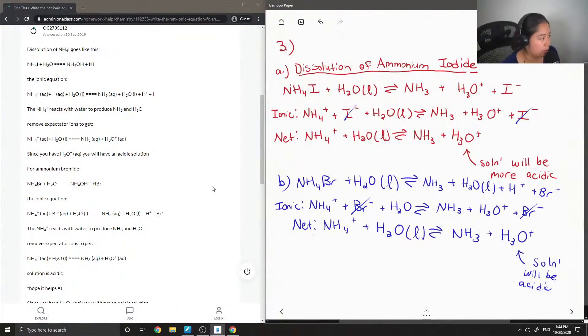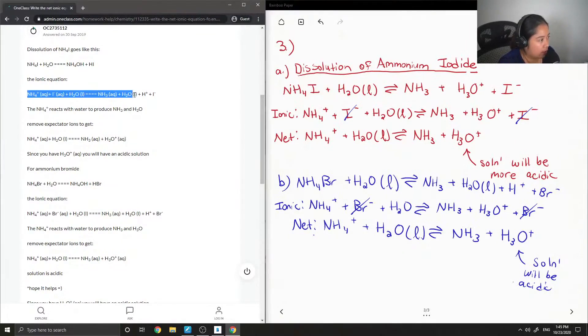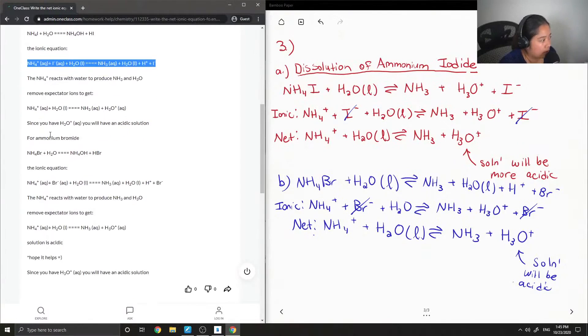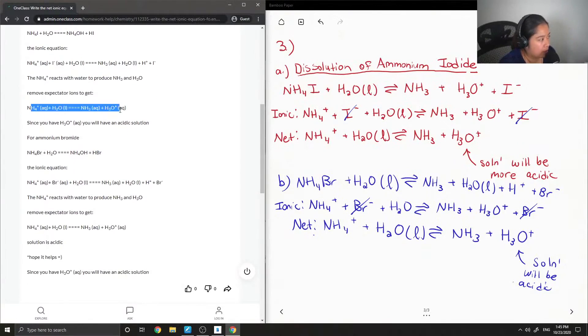Okay, so let's look over to what our junior tutor said. They wrote out the dissolution of ammonium iodide. They have the net ionic equation here. They remove the spectator ions to get NH4 plus H2O, NH3 and H3O plus.